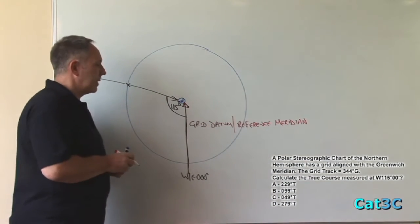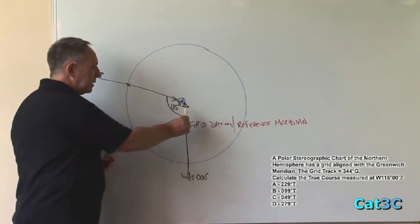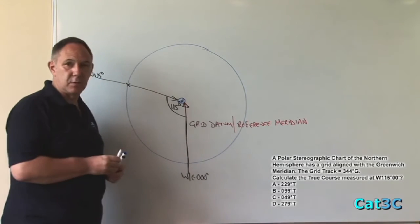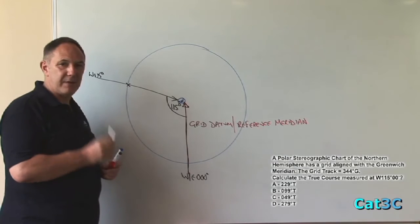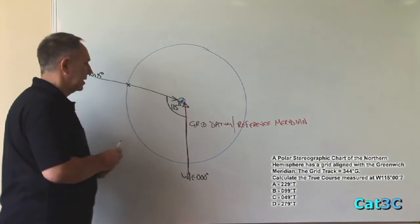All other grid meridians on this chart will be aligned with the grid datum meridian. That means they will be parallel to it and they will be pointing in the same direction as it.